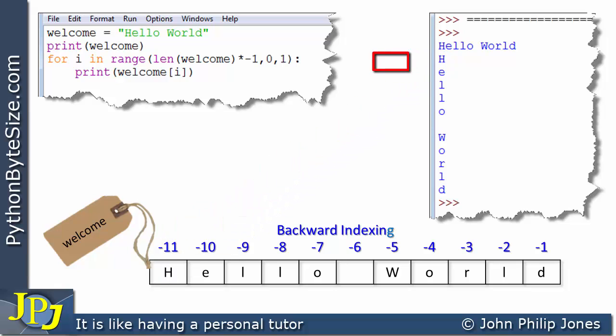We go back into the loop and execute this. Because the step is 1, we've gone from minus 11 to minus 10. We now pick this one from the string and this E gets displayed. We go into the loop again with minus 9 in i, so welcome[i] picks up this one and displays that to the screen.